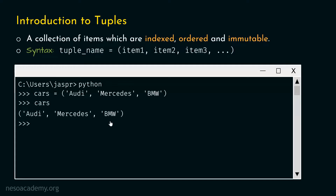Let's understand the meaning of 'indexed' first. The tuple items are indexed, meaning each item has an index. This item has index zero, this item has index one, and this item has index two. So each item in a tuple has an index, and we can access an item using its index. That is why tuples are called indexed.